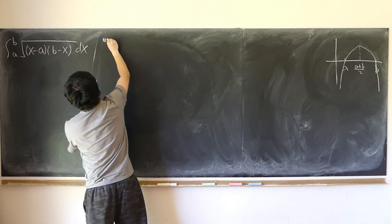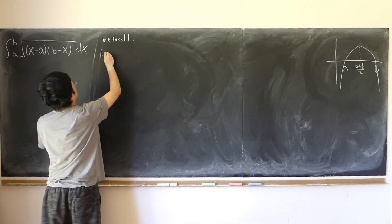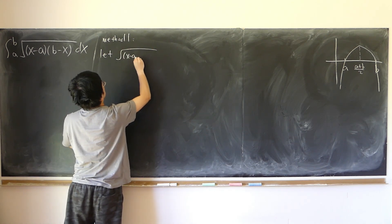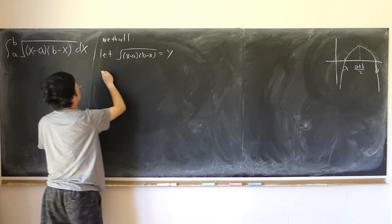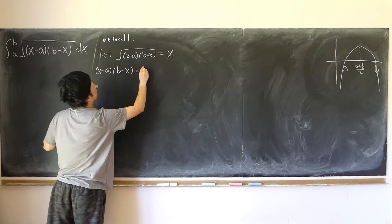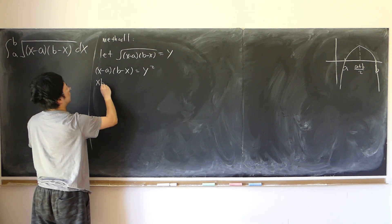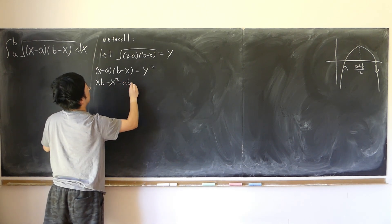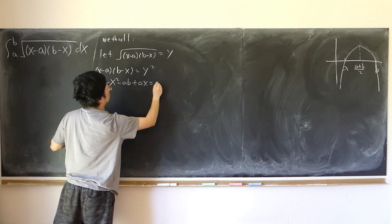Method one: let the square root of (x minus a)(b minus x) equal y. Then (x minus a)(b minus x) equals y squared. Expanding: x(b minus x) minus a(b plus a)x equals y squared.